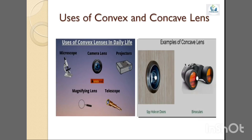Convex lenses are used in microscopes, cameras, projectors, magnifying glasses, and telescopes. In all these devices you want an enlarged image of the object — this is because when an object is within the focus of a convex lens, it produces an enlarged image. Concave lenses produce a diminished image for all positions of the object, so they are used in spy holes on doors, binoculars, and so on.